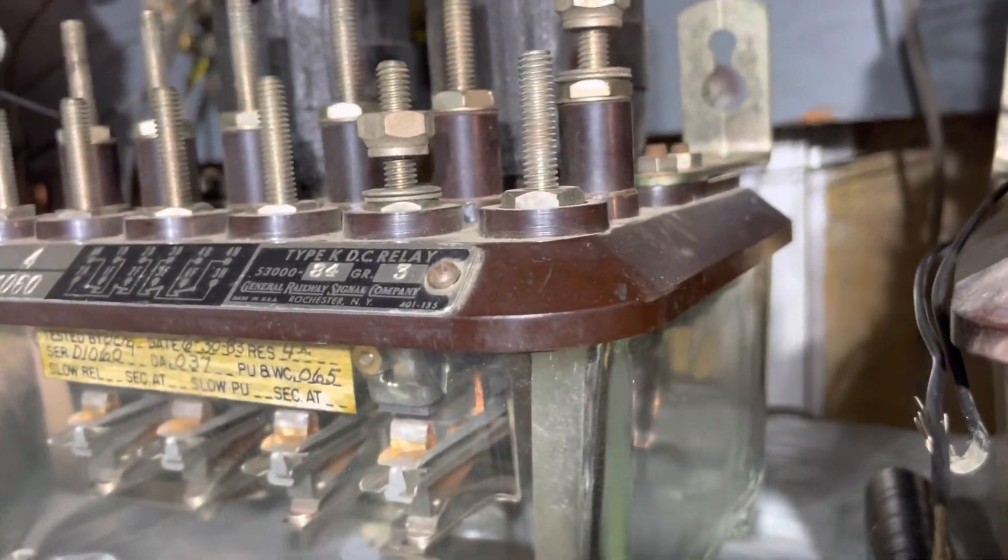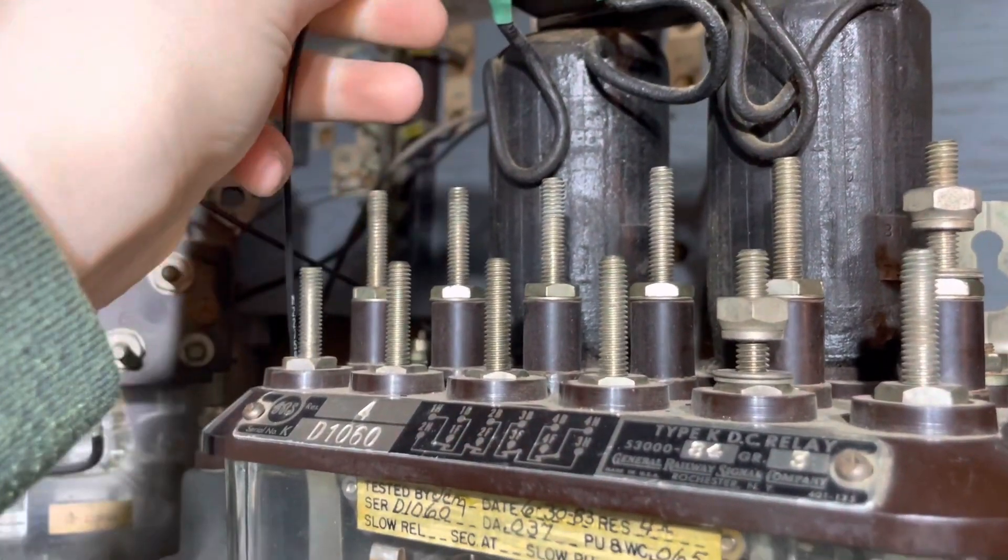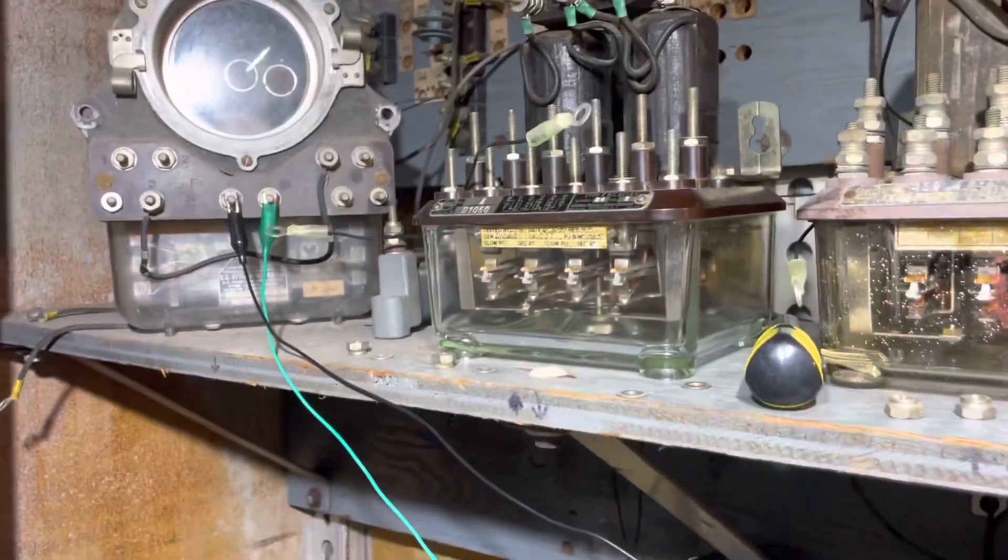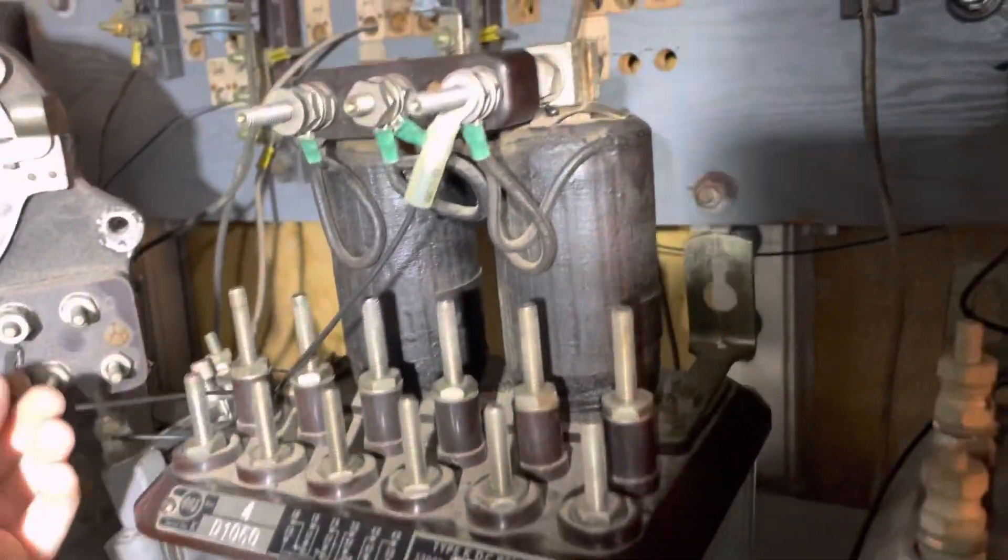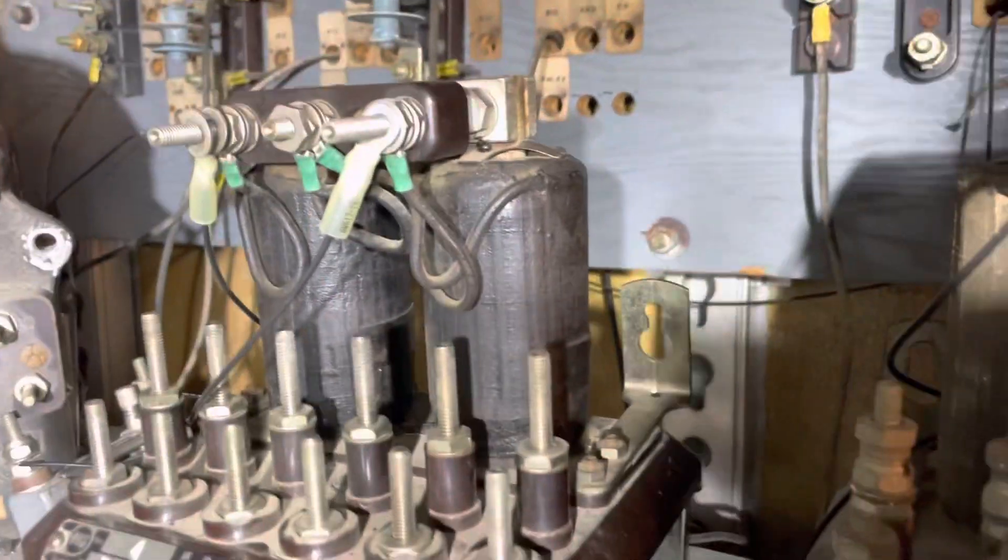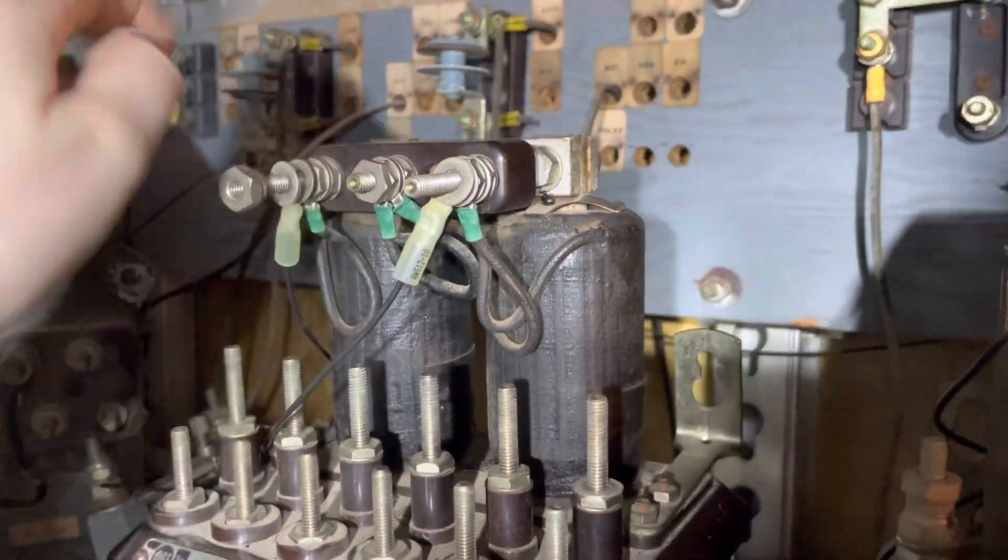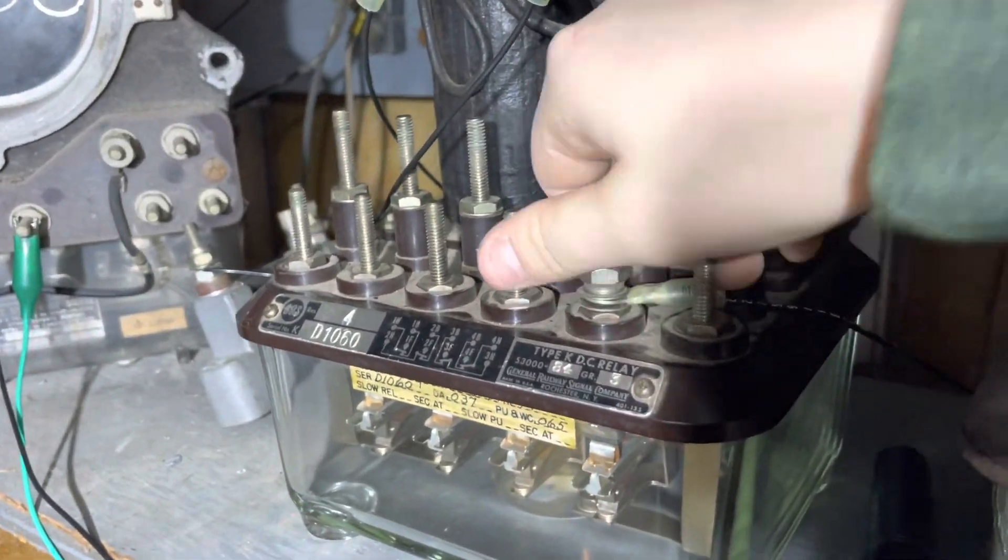Now we're going to start connecting the relay. First, we connect the track circuit. Actually, first we're going to put connectors on all these. Now we've got terminals on all of them. Now we're going to go ahead and put on the wires. We'll turn our heads. Now we're going to cut this so we don't have all of them together.